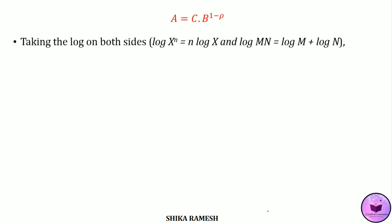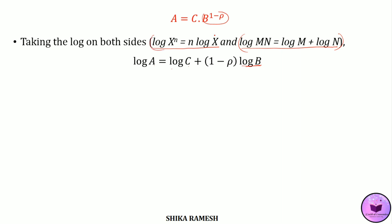Taking the log on both sides, we get log a equals log c plus 1 minus rho times log b. Here we have applied two logarithmic rules: log x raised to n equals n log x, and log mn equals log m plus log n. So log c times b to the power 1 minus rho becomes log c plus log b, with the exponent 1 minus rho brought in front of log b.